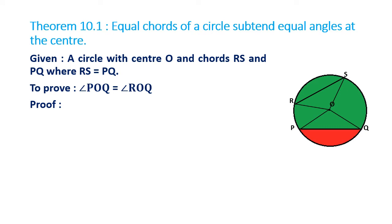Theorem 10.1: Equal chords of a circle subtend equal angles at the center. I have taken two chords RS and PQ. Chord RS makes angle ROS at the center, and chord PQ makes angle POQ at the center. We are given that the chords are equal, and we have to prove that the angles at the center are also equal.